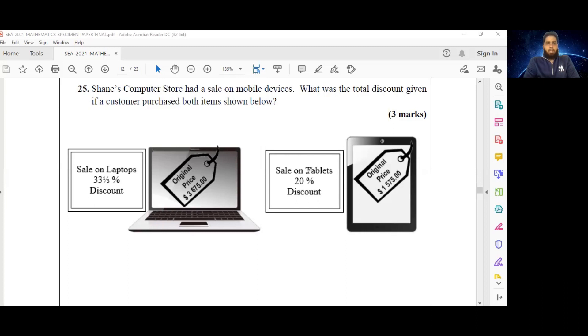Question 25 reads: Shane's computer store had a sale on mobile devices. What was the total discount given if a customer purchased both items shown below? We're looking to find the total discount.